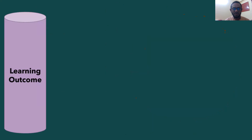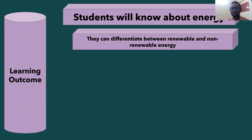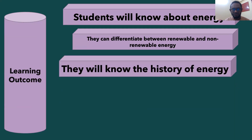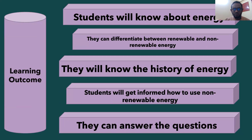The learning outcomes of today's lesson are: students will know about energy, what energy is, and will be able to explain it. You can differentiate between renewable and non-renewable energy sources. You will know the history of energy. Students will get informed how to use non-renewable energy alongside renewable energy resources, and you can answer the questions given here. I'm going to request all of you to note down the important points of my lecture.